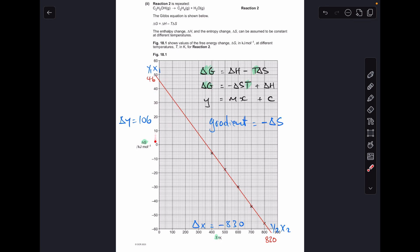So to get the gradient it's the change in Y, so Y1 minus Y2. So for me that's going to come out at 106 and we're going to divide that by the change in X. So that's X1 minus X2. So I would get minus 830. So the gradient is that divided by that which gives me a gradient of minus 0.128 kilojoules per mole. So remember that equals minus delta S. So delta S therefore will equal 0.128 kilojoules per mole. So obviously the minus signs have disappeared, have cancelled out.